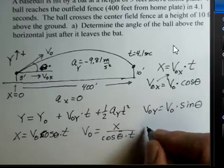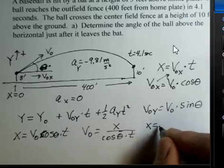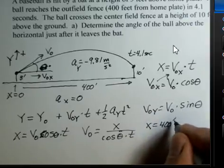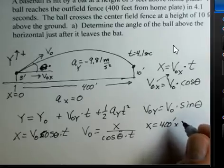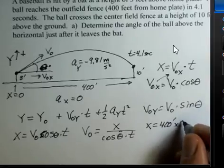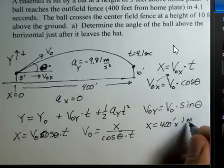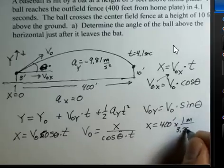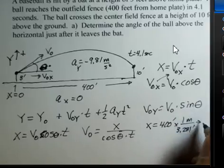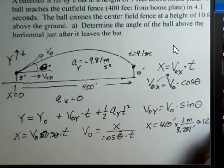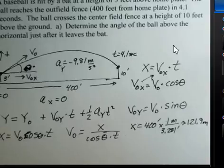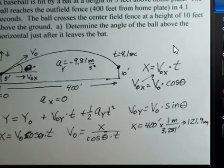First, let's convert the 400 feet into meters. When we do that, we take the conversion factor, one meter is 3.281 feet. And this gives us 121.9 meters. 121.9 meters is the x-value.